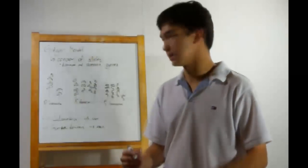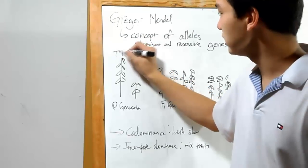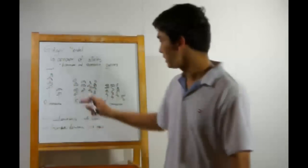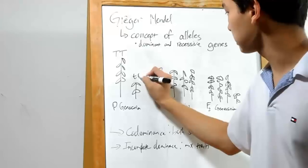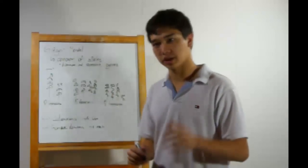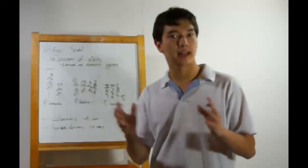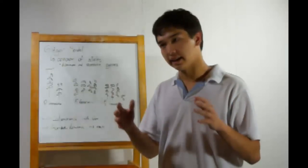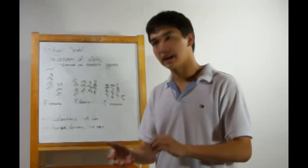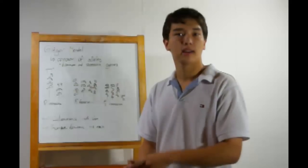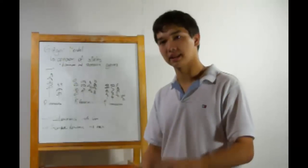Let me start drawing out those alleles. This tall plant has two tall genes — two big Ts. The short plant has two short genes — two little ts. Gregor Mendel also came up with the idea of dominant and recessive traits. If you have a dominant trait in your genotype, no matter what else you have there, your phenotype will always show the dominant trait. If you have a recessive trait, the phenotype will be recessive only if you have two recessive genes.